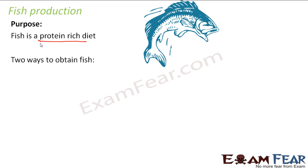How do we obtain fish? Fishes are found in aquatic mediums — in rivers, ponds, lakes, and oceans. So those are the places where fishes are found.